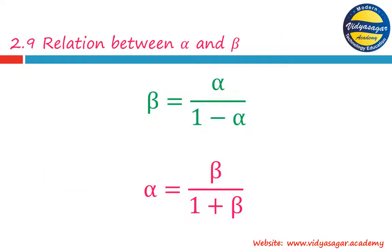There is one important mathematical relationship between beta and alpha given on page number 29. This topic is definitely asked in the internal college examination of 11th standard. The relationships are: β = α / (1 − α), and α = β / (1 + β). You can derive these very easily by looking at the derivation given on page number 29.